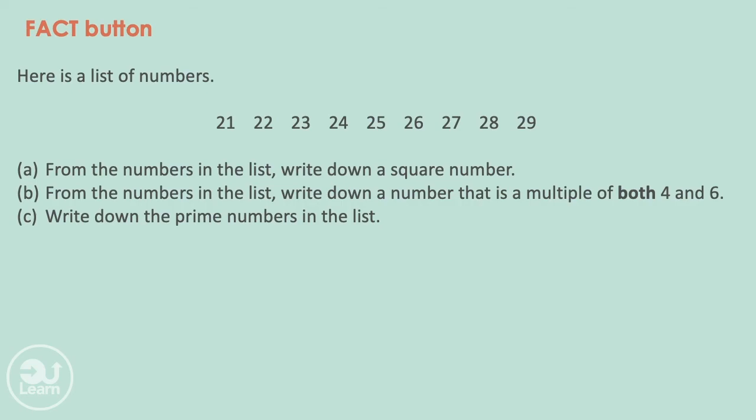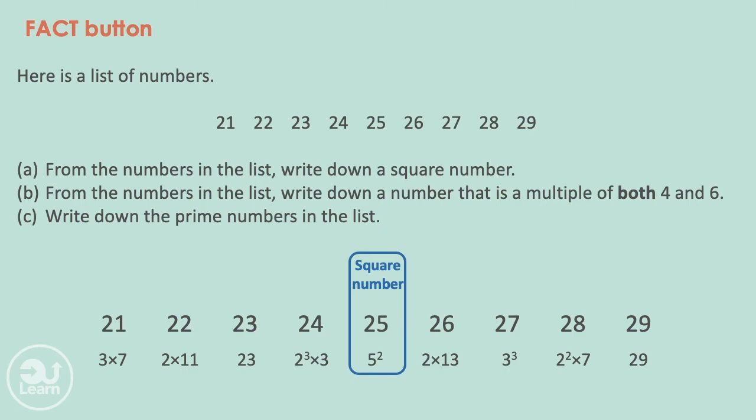Let's use the fact button on all the above numbers. A nice trick to know if a number is a square number is if all the powers of the prime numbers of a number are even. The only number with only even powers is 25. Therefore, 25 is the only square number.